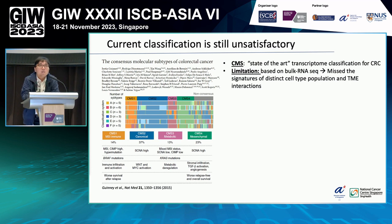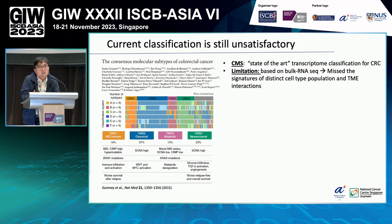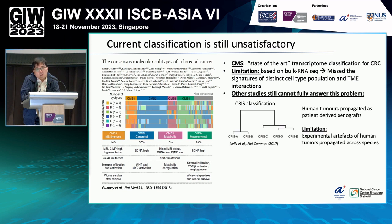This CMS classification was able to classify most CRC tumors. However, it is still based on bulk RNA-seq data, which has some limitations — for example, it might miss the signature of distinct cell types, and it will completely miss tumor microenvironment interactions. A lot of effort has been done in recent years to tackle this problem.